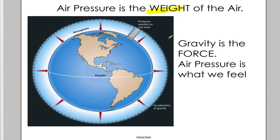Air pressure, to simplify it, is the weight of the air pushing down on top of you. So this diagram shows the Earth and we see arrows representing gravity's pull. Gravity is the force, air pressure is what we feel, and really what we measure.